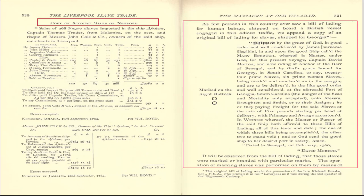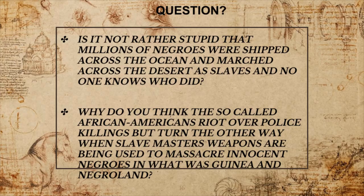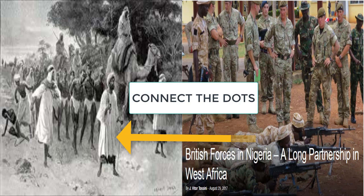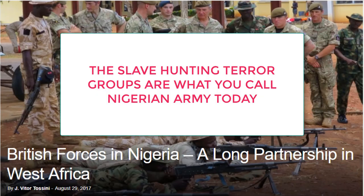Before they were called Negroes, they were called Ethiopians. You see how their identity has been meddled with and everything turned upside down. Don't complain about whatever name we use — we don't have better choices. If you can provide what you think should be the right name for the group, we'll be happy to adopt them if they are correct. Is it not rather stupid that millions of Negroes were shipped across the ocean or marched across the desert as slaves and no one knows who did it? Why do so-called African Americans riot over certain killings but turn the other way when slave masters' weapons massacre innocent Negroes in what was Guinea and Negroland? Put your answers in the comment section.